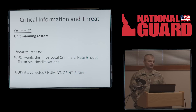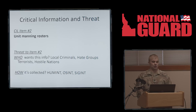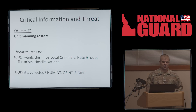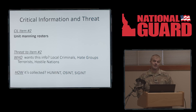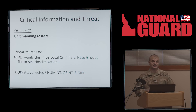Critical information list item number two is unit manning rosters. People don't need to know who's in the guard. Local criminals — particularly identity thieves — along with hate groups, terrorists, and hostile nations are the threats for this item. The collection methods are HUMINT, OSINT, and SIGINT, which are the main three. The other two collection forms are not seen as much, especially here in Idaho, and we're trying to tailor the threat picture to where we currently are.